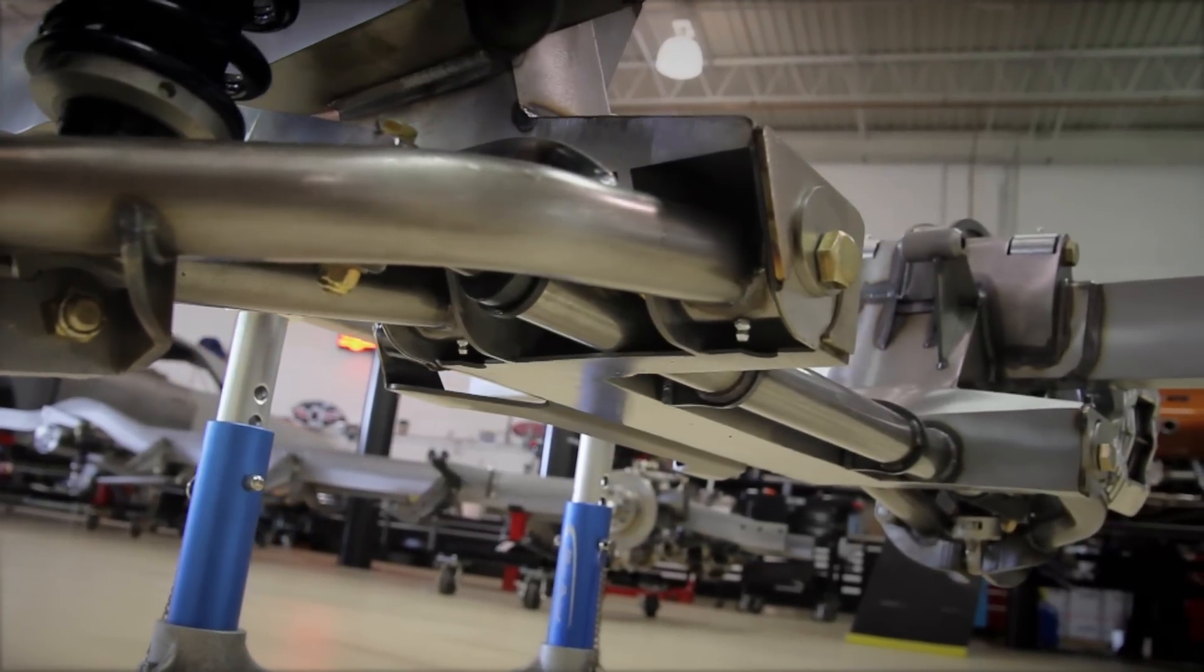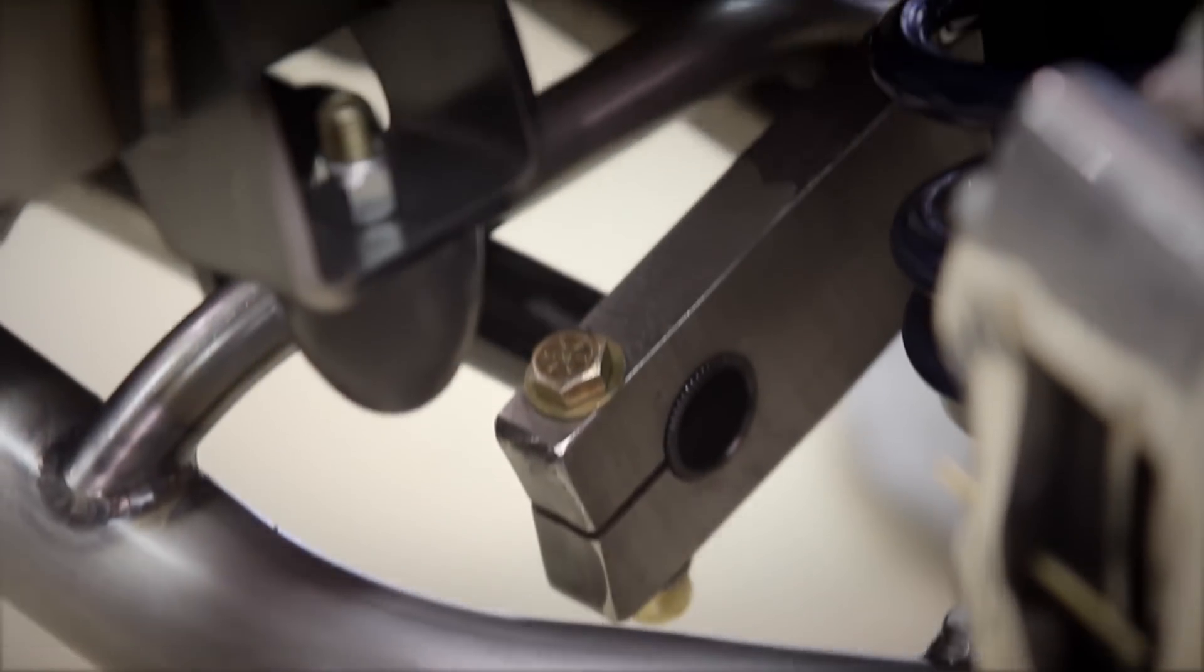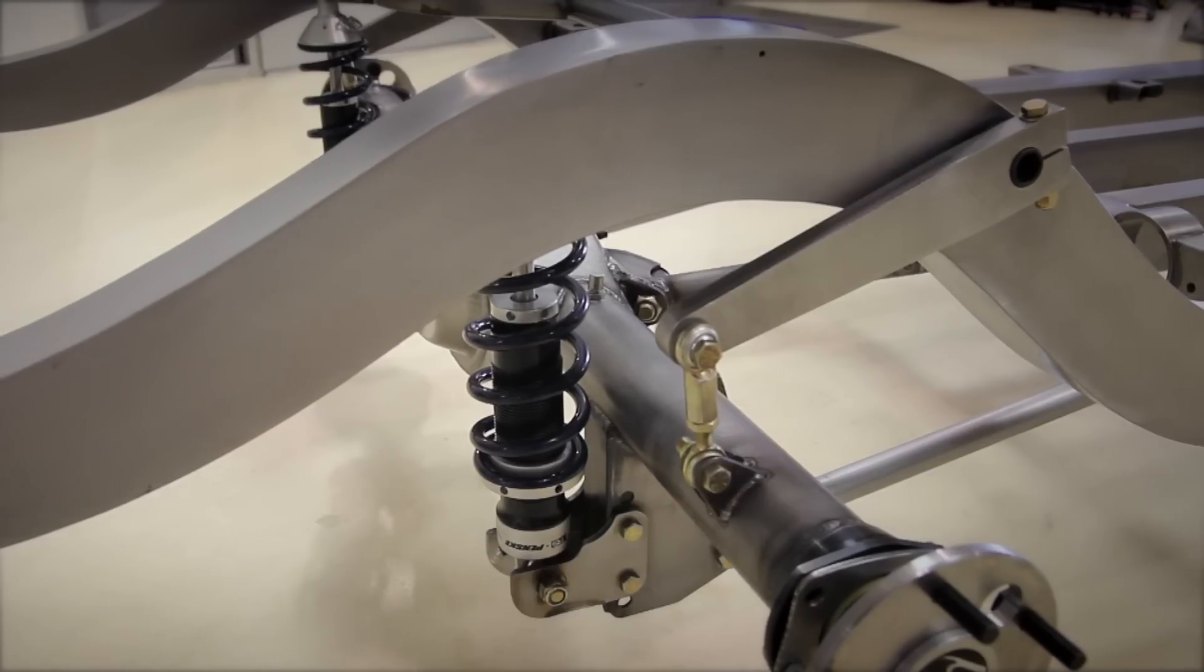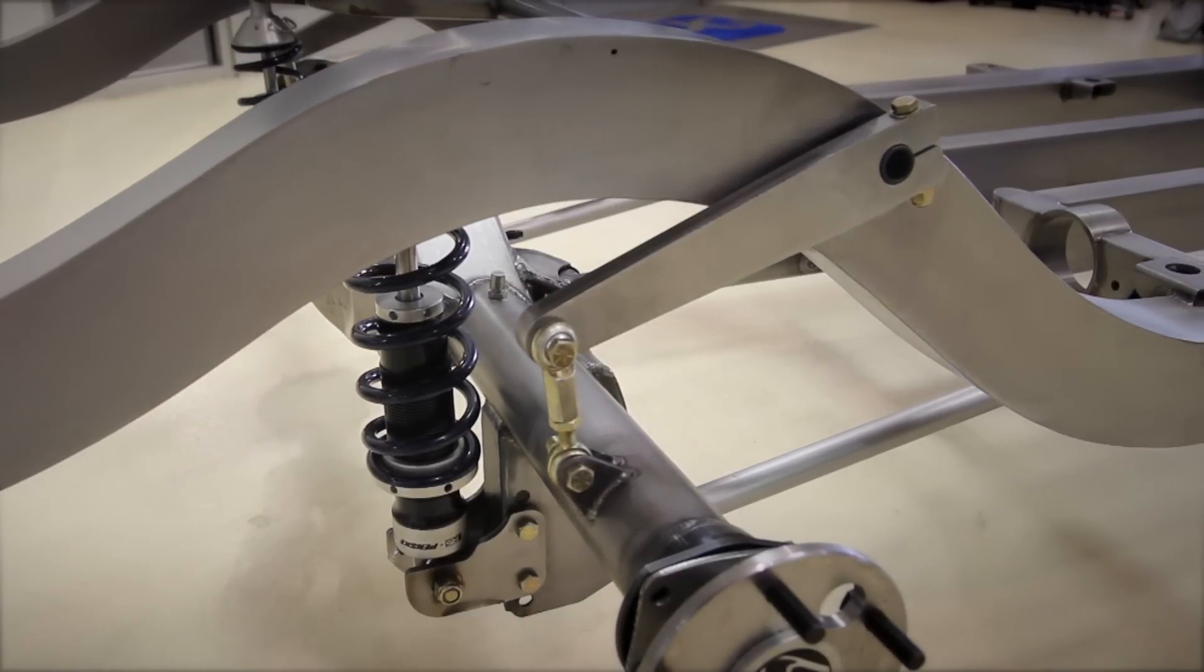The sway bars play an important role in the suspension and body roll of the car. We were able to integrate a one inch spline sway bar in both the front and rear suspension on the Tri-5 chassis.